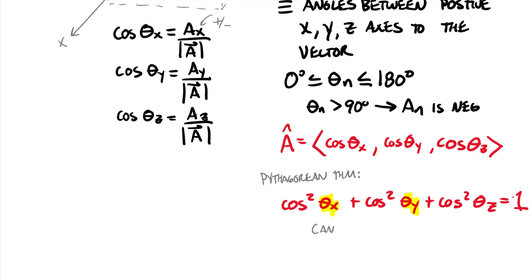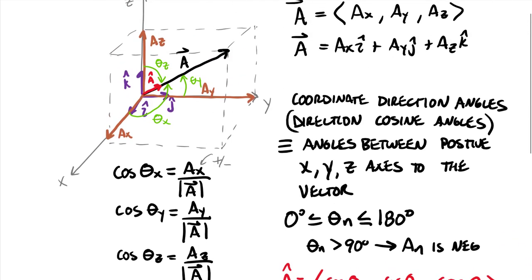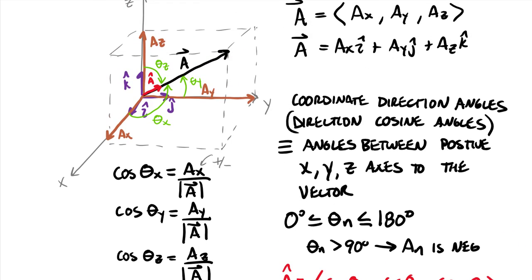So that is how we use direction cosine angles — also known as coordinate direction angles — to come up with a unit vector along a certain line. We'll use this fundamentally when given even two of the three angles. In the next video, we're going to talk about spherical coordinates and how you can use those as well.